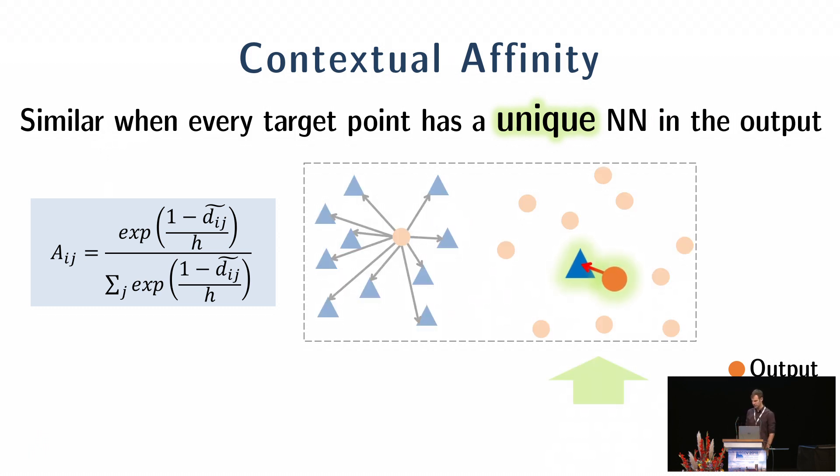Let's look again at the example. This orange circle, the point, have one-to-one match to a single blue triangle. Thus, it should have high affinity. Our normalization capture that.